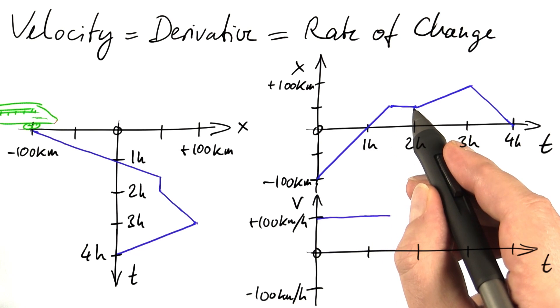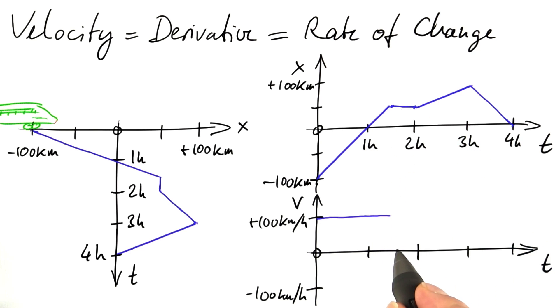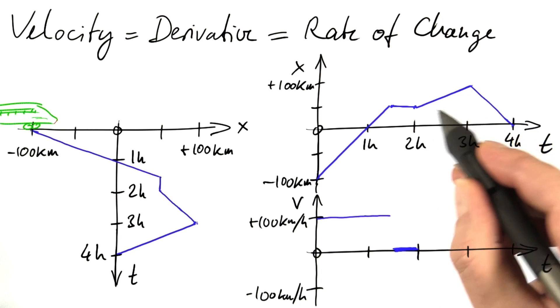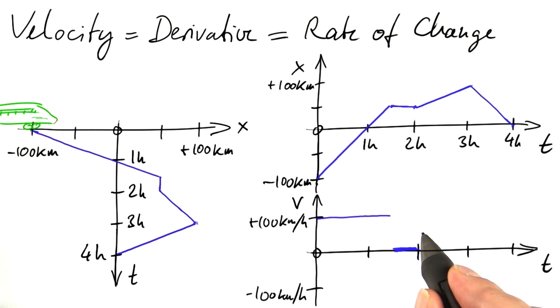And then the train stops, which means we have a velocity of zero and here the train starts again and makes 50 kilometers per hour, which is just half as much as before. And here we are going backward with 100 kilometers per hour as a speed. So the velocity is minus 100 kilometers per hour. This is what the velocity looks like.